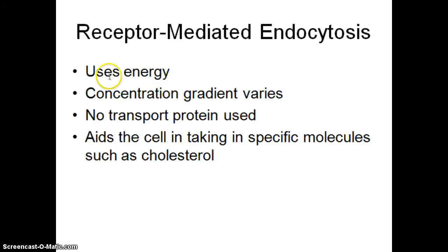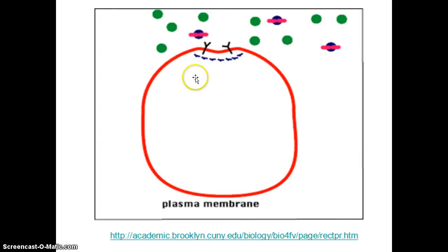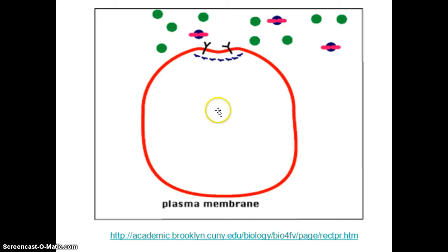Receptor-mediated endocytosis also uses energy. Concentration gradients can vary, we don't need a transport protein, and the reason cells do this is to take in very specific things. Here's an example: these Y-shaped things are receptor proteins embedded in the plasma membrane. Specific molecules link up with a particular receptor, causing it to dimple in, and then you have a vesicle — called a coated pit — bringing that particular molecule inside. Cut and paste the link into your browser to watch receptor-mediated endocytosis occurring, then come on back.